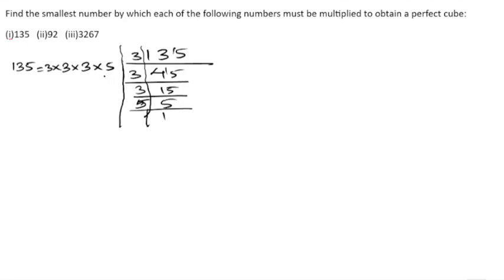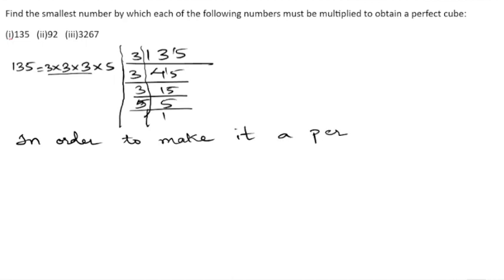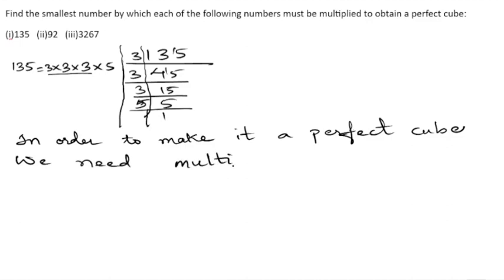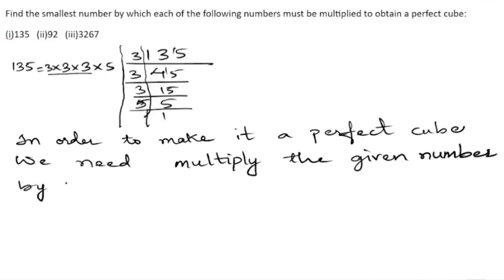For a perfect cube we need each prime factor three times. Here we have 3 appearing 3 times, but 5 appears only once. In order to make it a perfect cube, we need to multiply the given number by 5×5, which is 25. So the answer is 25.